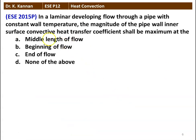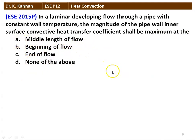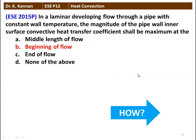Next question: in a laminar developing flow through a pipe with constant wall temperature, the magnitude of the pipe wall inner surface convective heat transfer coefficient shall be maximum at — the middle, beginning, or end of the flow, or none of the above. The answer is beginning of the flow. We will see how in the next slide.